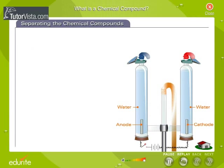Separating the chemical compounds. Unlike mixtures, which are fairly easy to separate, the strong bonds in a compound can be broken only by chemical means.